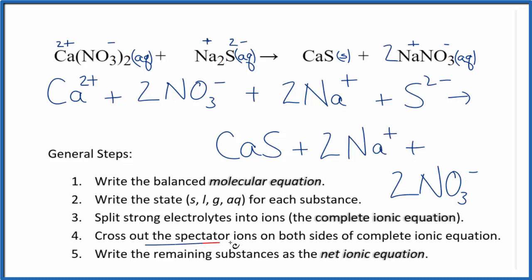Now we can cross out spectator ions. They're on both sides of the complete ionic equation. When I look at the reactants and the products, I see I have 2 nitrate ions in the reactants and in the products. So those are spectator ions. We can cross them out.